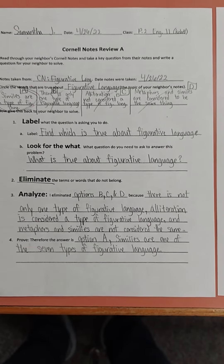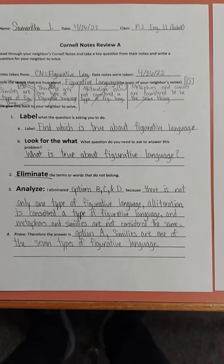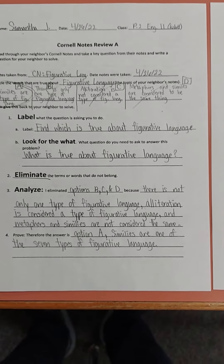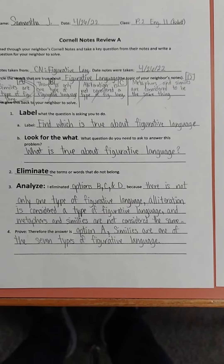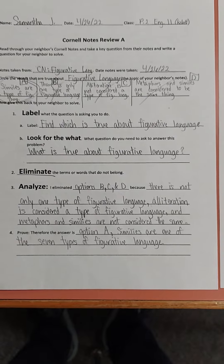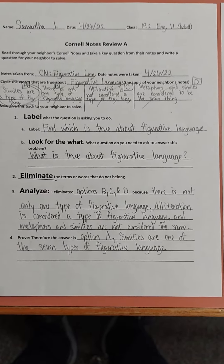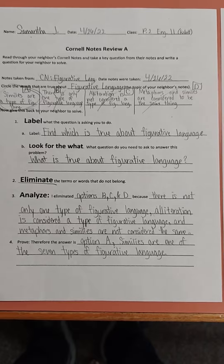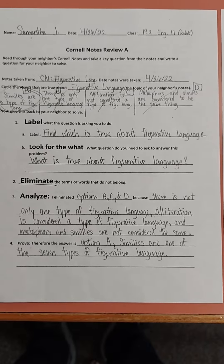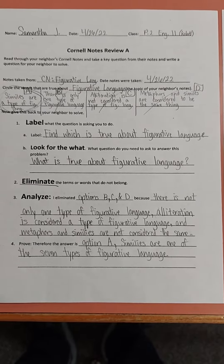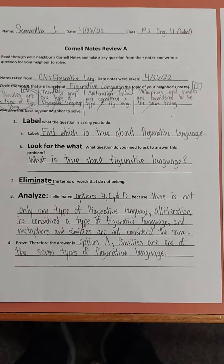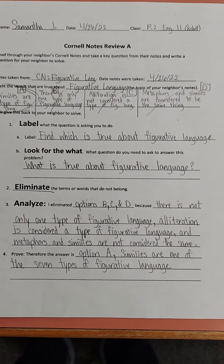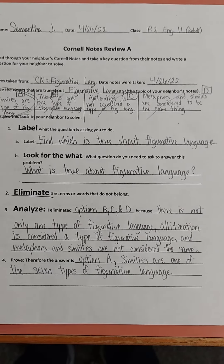Eliminate B. Analyze: I eliminated B, C, and D. There is not only one type of figurative language. Alliteration is considered a type of figurative language, and metaphors and similes are not considered the same. Therefore, the answer is option A — similes are one of the seven types of figurative language.